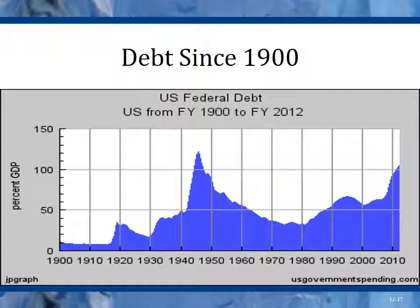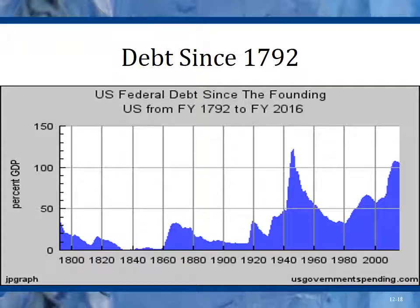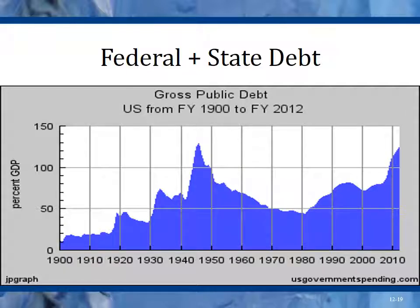Debt stayed relatively stable through the early 2000s, then in the late Bush and early Obama administrations it skyrocketed with the Great Recession. Federal plus state debt: at this time we are as high as we've ever been in our nation's history when you add federal and state debt together. State debt has really increased dramatically — there was hardly any state debt earlier.